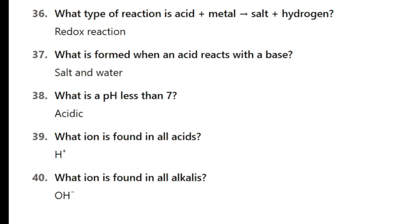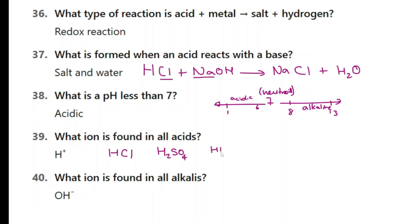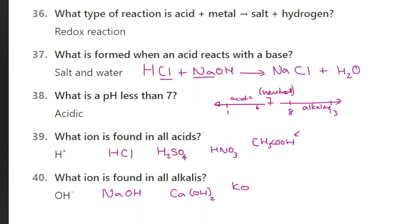Here are the next five questions, 36 to 40. Pause the video and do these questions. Question 36: what type of reaction is acid plus metal giving salt plus hydrogen? It is a redox reaction. What is formed when an acid reacts with a base? You get salt and water. For example, hydrochloric acid reacts with sodium hydroxide to give sodium chloride plus water. What is a pH less than 7? Acidic — 7 is neutral, above 7 is alkaline, below 7 is acidic. What ion is found in all acids? H+. What ion is found in all alkalis? Hydroxide ions — sodium hydroxide, calcium hydroxide, potassium hydroxide.